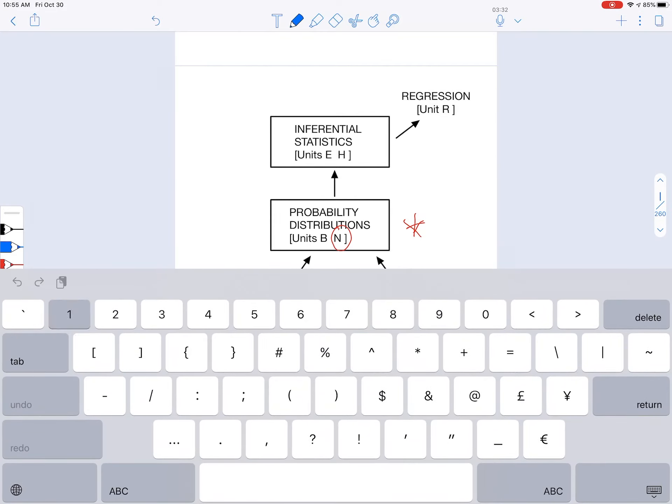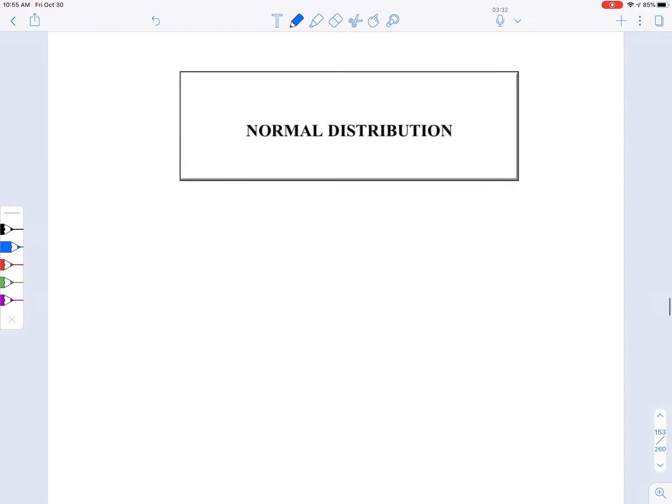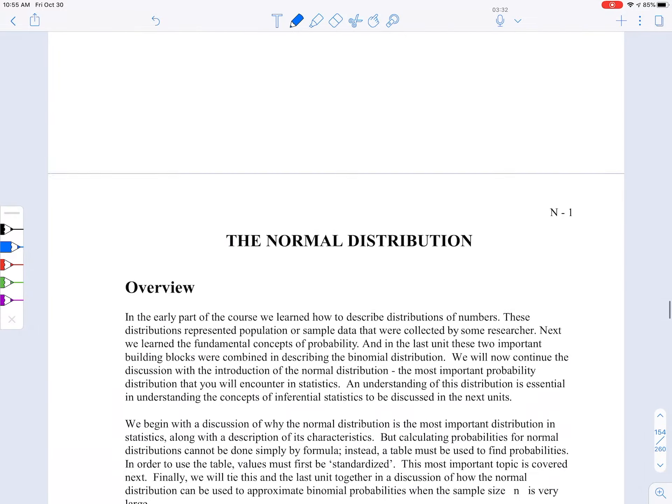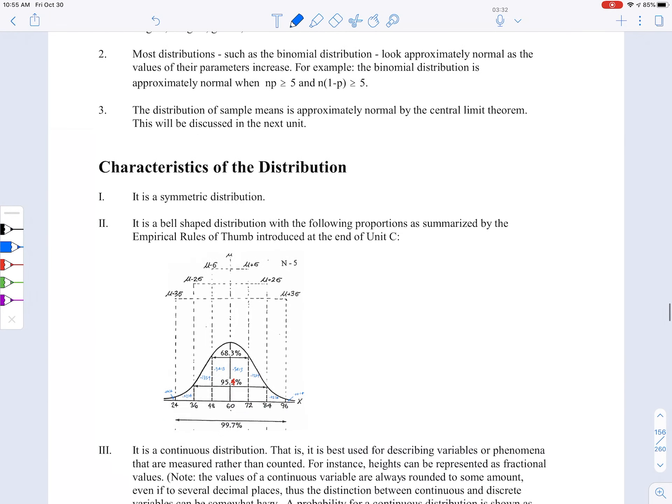The normal distribution. We're going to take a look at the importance and characteristics of the normal distribution, the standardized normal distribution, how to calculate probabilities, and then something called the normal approximation of the binomial, which I briefly mentioned in Unit B. This thing down here is a bell curve, and you're going to see a lot of that. I'm going to be drawing a lot of bell curves, as will you, in the next several months.